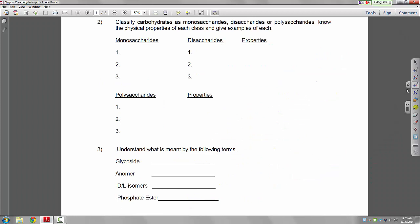Classified carbohydrates as monosaccharides, disaccharides, or polysaccharides. And the physical properties of each class and give examples of each. There is another document online that I won't go through completely. But the monosaccharides, we had glucose, galactose, and fructose.